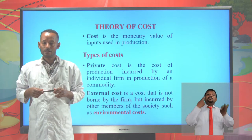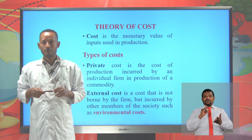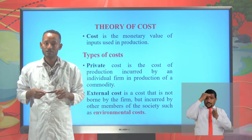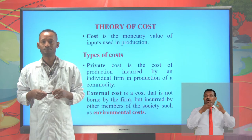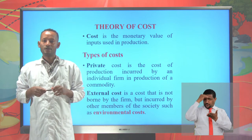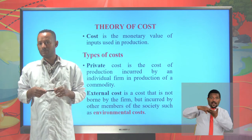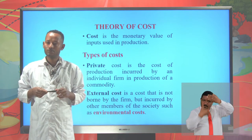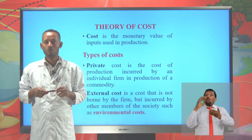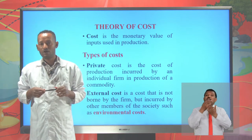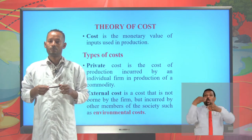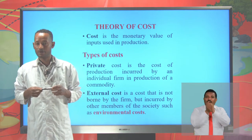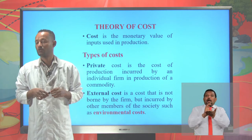This is a Grade 12 Economics Revision Lesson provided by the Ministry of Education. In the previous lessons, we saw the theory of production. Under the theory of production, we saw the production function with one variable input labor, the production function with two variable inputs labor and capital, which is about isoquants.